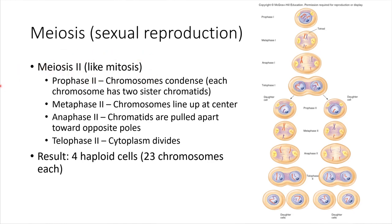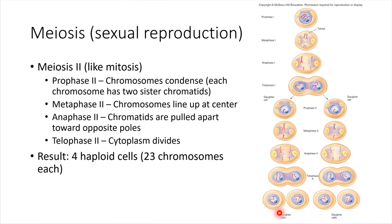Moving on to meiosis two — this is almost just like mitosis. During prophase two, the chromosomes condense again. There are two sister chromatids, and the goal is to get those sister chromatids separated. In metaphase two the chromosomes line up; in anaphase two those sister chromatids get pulled apart, just like in mitosis. Then telophase two, the division essentially completes. The end result after meiosis one and meiosis two is that we've formed four haploid cells, each with a complete set of 23 chromosomes.